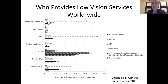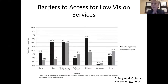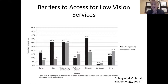Barriers to access include cultural barriers, cost of devices and visual aids, and the notion that 'nothing further can be done.' While nothing further may be possible surgically, patients often receive the message there's nothing else out there to help — a barrier all health providers can address. Distance and travel are also huge issues, as many low vision patients cannot drive and rely on family members to take them to appointments.